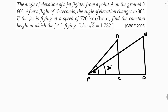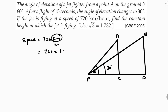The speed of the plane is 720 km per hour. Since the time is given in seconds, I'll convert the speed to meters per second: 720 × 1000 divided by (60 × 60), which gives 200 meters per second.